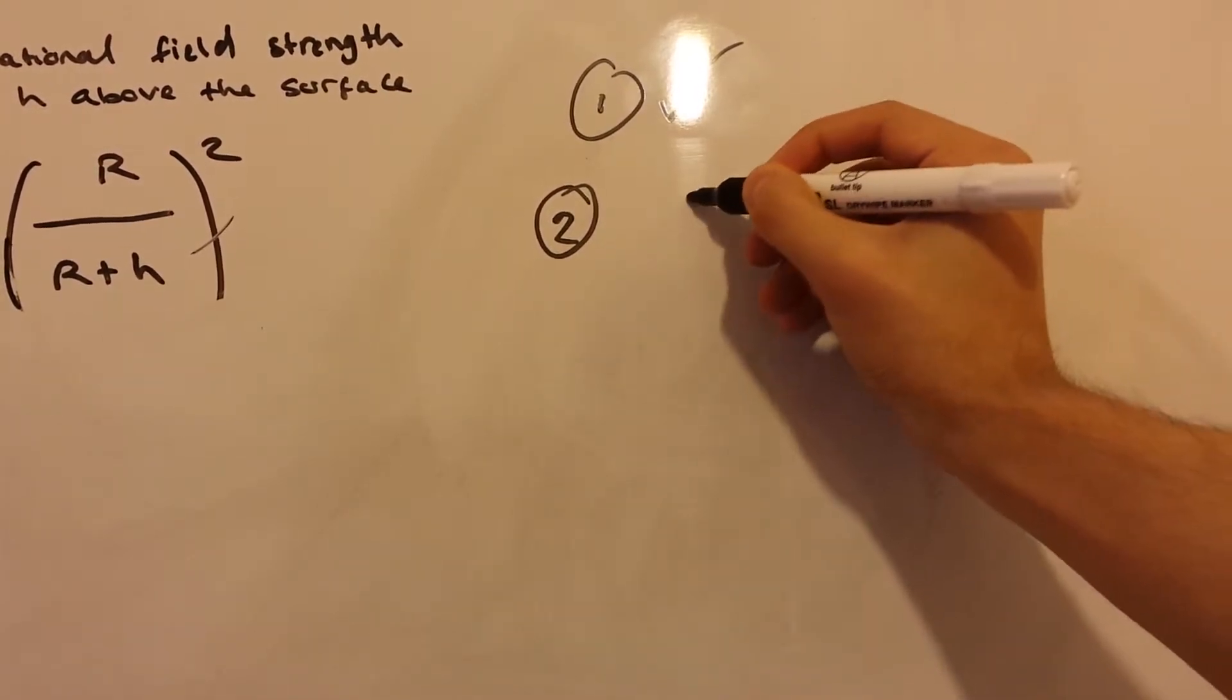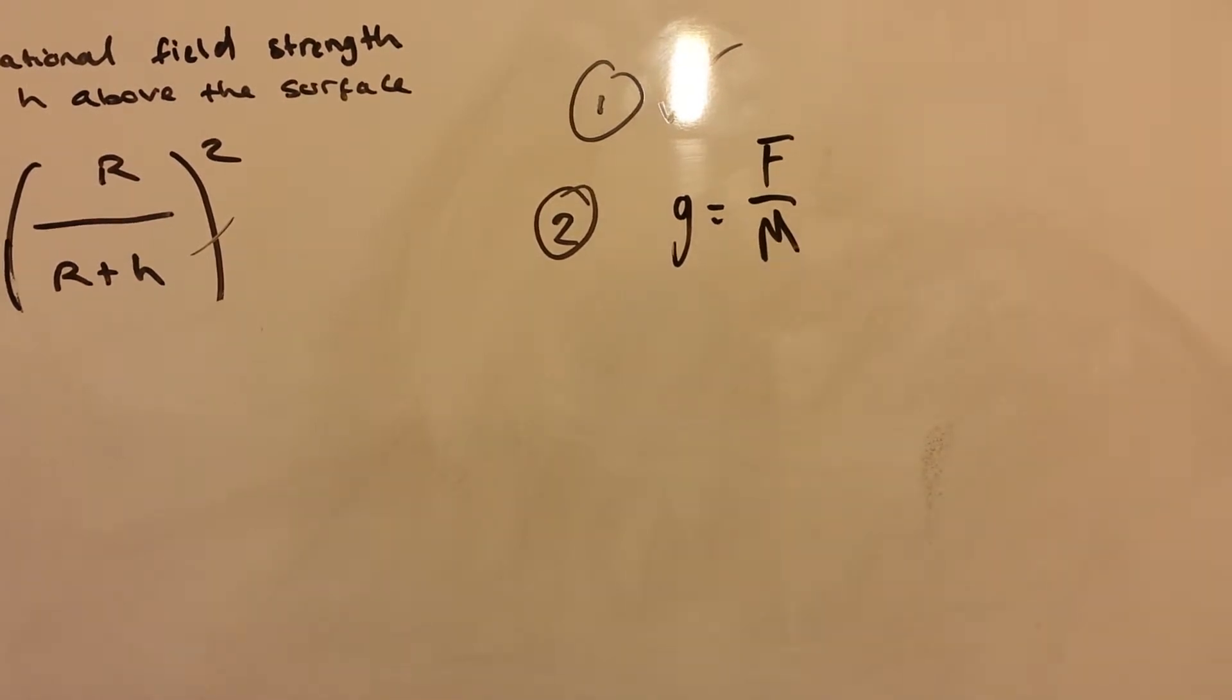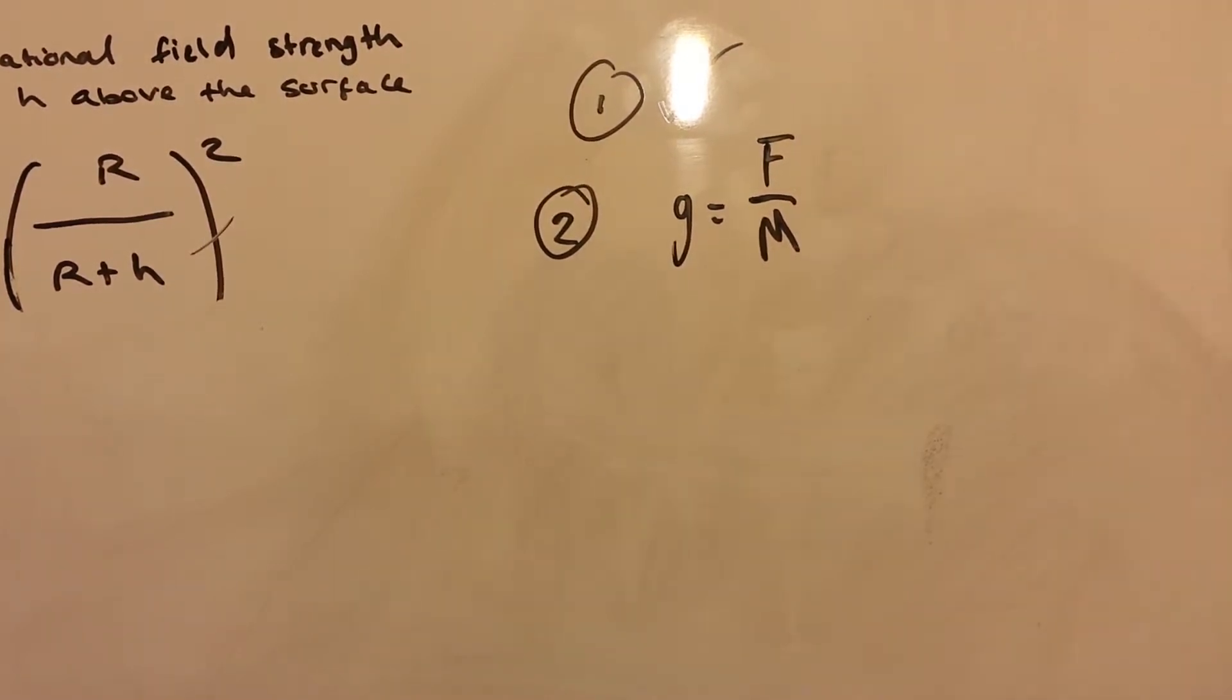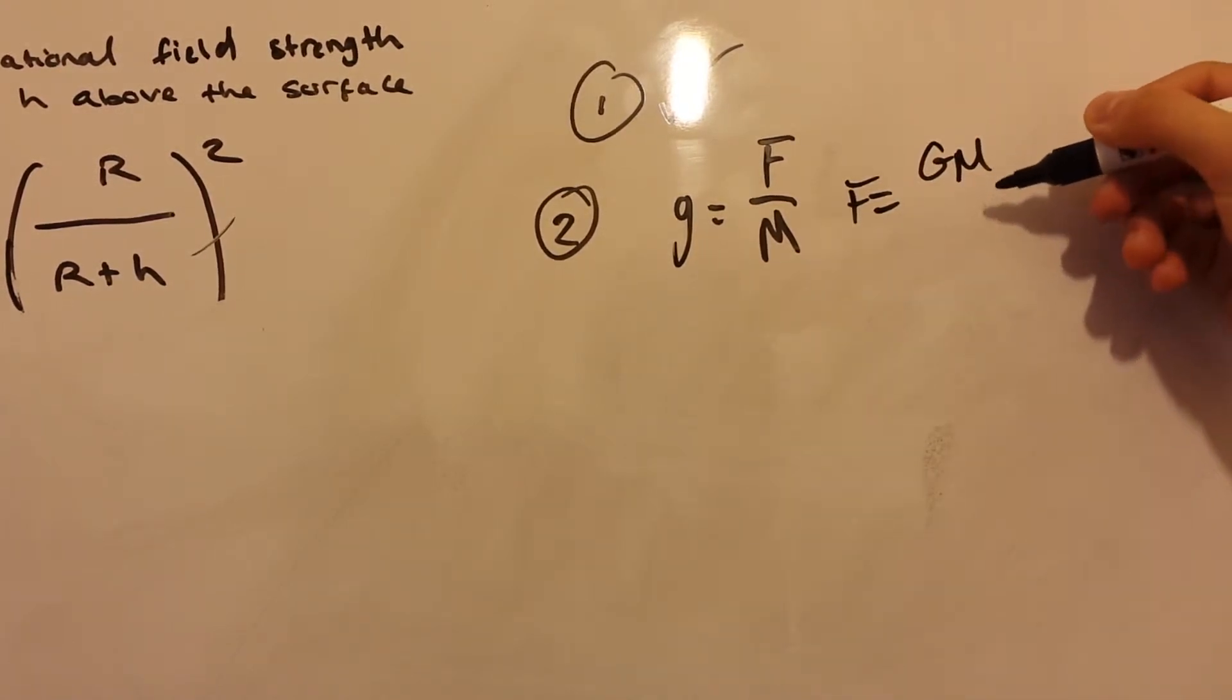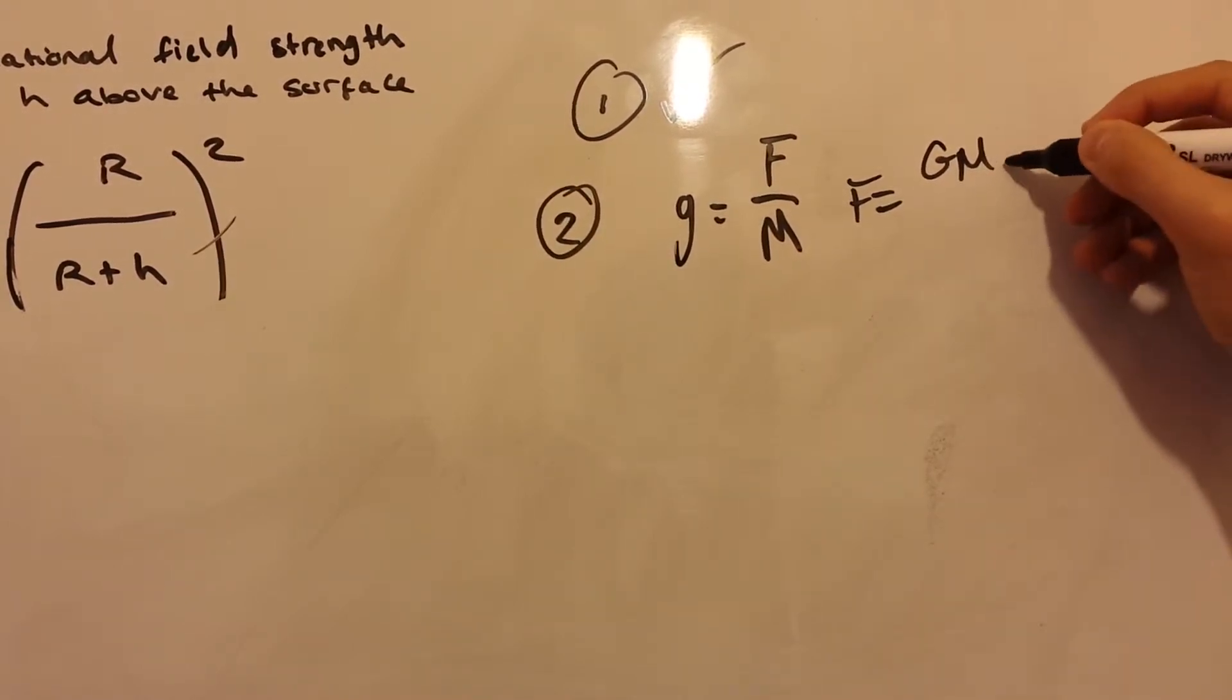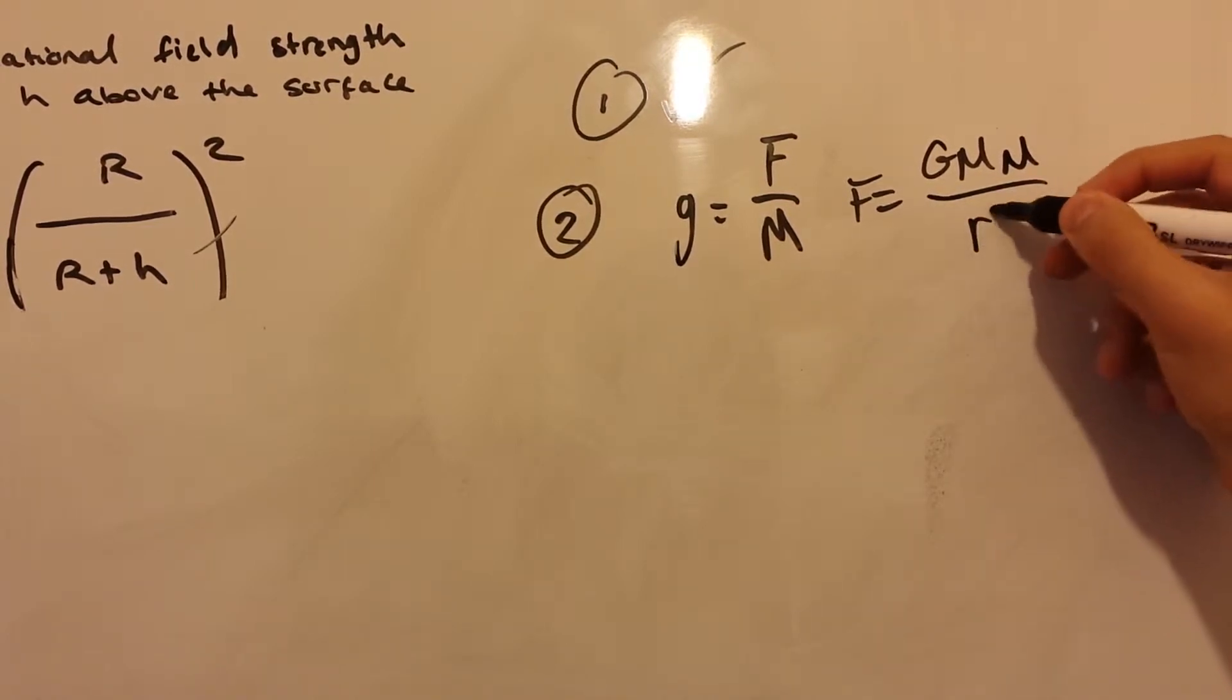So, gravitational field strength is force per unit mass. This force is a gravitational force. And what we know about gravitational force is that gravitational force equals the constant of proportionality multiplied by big mass and that's multiplied by small mass over r².